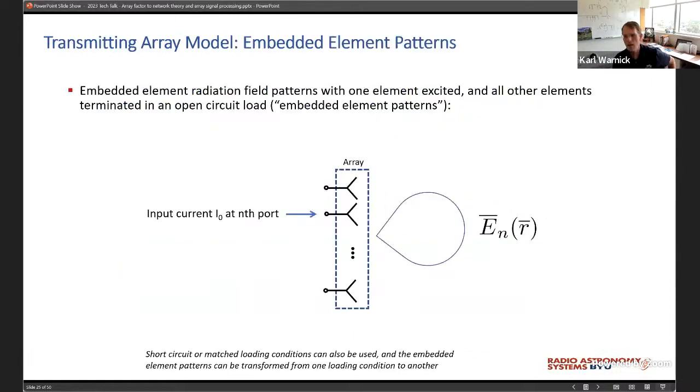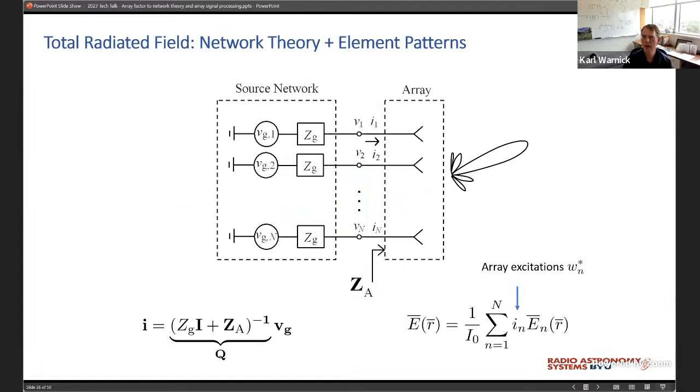A little more detail on how we actually model the phased array. What are we asking the commercial software to do? We give it a very specific job. We hand it a candidate array design and we have the software excite one of the elements and get what's called an embedded element pattern. That embedded element pattern includes all effects, including interactions between elements, coupling, edge effects, and so on. And we do that for each of the big N elements in the array. So basically our first step is to model embedded element patterns with the array transmitting.